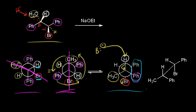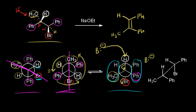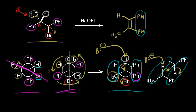The two phenyl groups are gauche to each other in this Newman projection, so they end up on the same side of the double bond. On the back carbon there is a phenyl group, on the front carbon there is a phenyl group; on the other side, the back carbon has a hydrogen and the front has a methyl group. In the sawhorse projection, the base takes the beta proton, the electrons form the double bond, and the two phenyl groups are on the same side, with the methyl group and hydrogen on the other side — this is the Z-alkene.